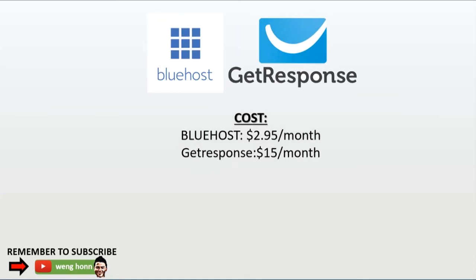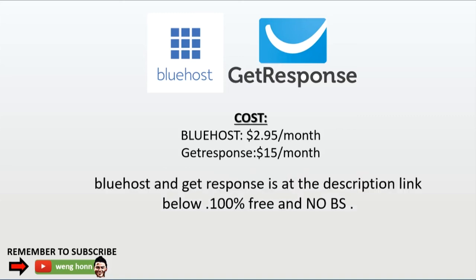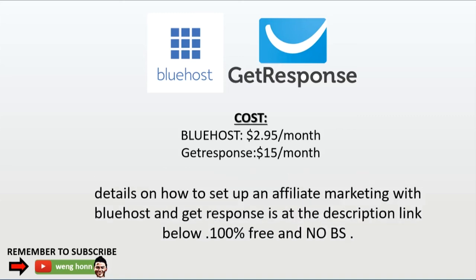Bluehost costs $2.95 per month and GetResponse will cost you $15 per month, so it's about $18 per month total — the cheapest and most effective way to run an online business. I have left the link below where you can learn everything on how to run an affiliate business using a website and email marketing. It is free for you to learn, so go and grab it now.